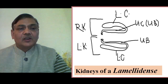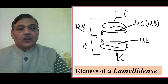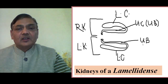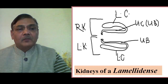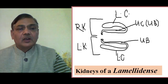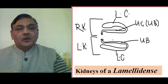A single kidney is U-shaped. The posterior portion, near the posterior adductor muscle, is a looped structure. The lower chamber (LC) is totally closed and is the main functional area where waste material is separated. The upper portion acts as a urinary bladder, retaining excretory contents before releasing them through the renal aperture, which opens into the suprabranchial chamber.